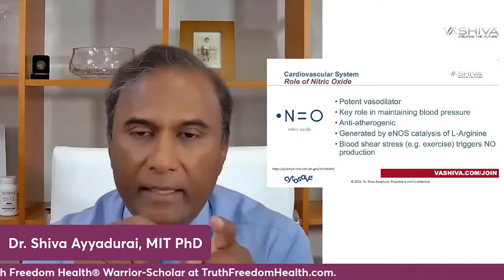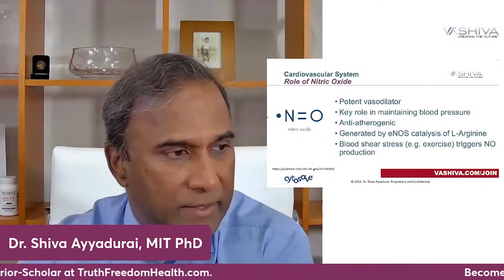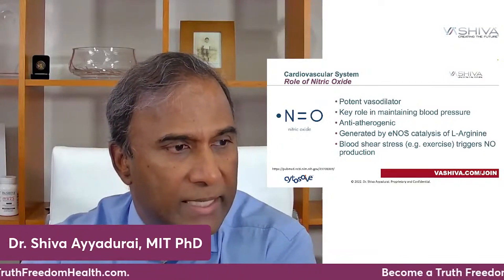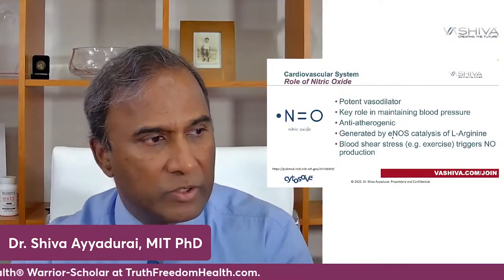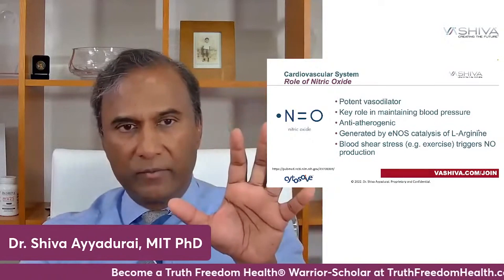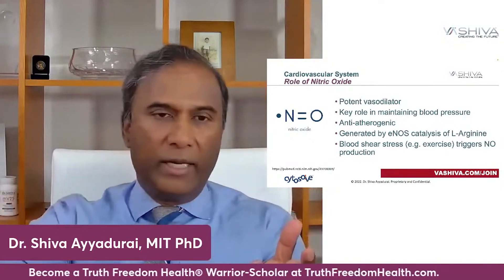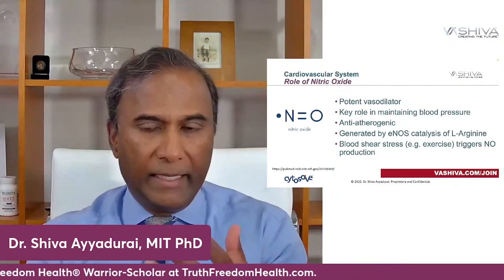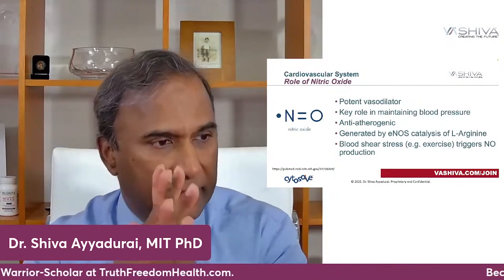Nitric oxide is generated — listen very carefully — it's generated when ENOS, endothelial nitric oxide synthase, which is a catalyst, enables the release of arginine. So nitric oxide gets generated when ENOS catalyzes L-arginine, which is an amino acid. In order for nitric oxide to get released, you have to have ENOS, which is a chemical your body should make, and you have to have arginine, which comes from food.